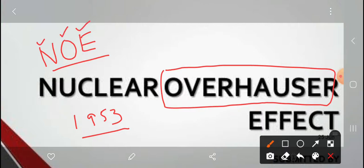First of all, we discuss the great importance of this effect. This technique is one in which the intensity of NMR signals can be enhanced significantly by the irradiation of the neighboring protons within the molecule. That is the main important point in the Nuclear Overhauser Effect.